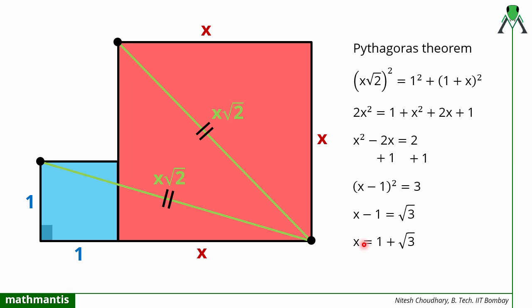Now we can square it and find the ratio of area, which is nothing but 1 + 3 + 2√3, that is 4 + 2√3. So this is the ratio of area of red square upon blue square.